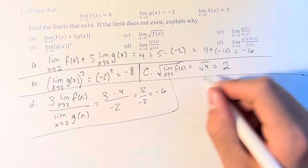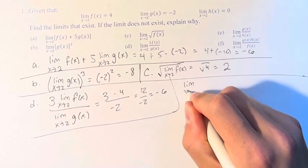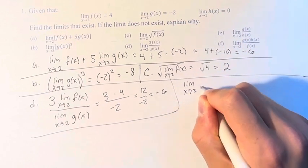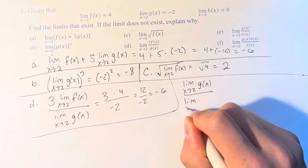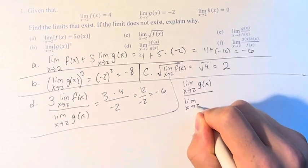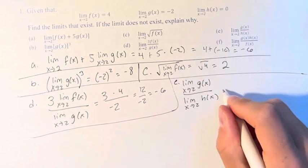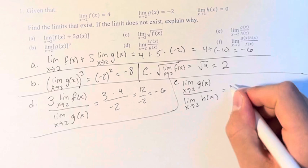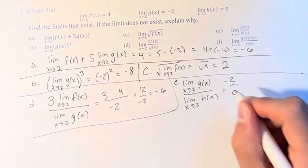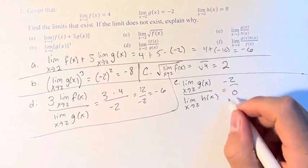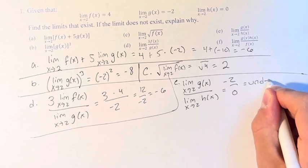The limit as x approaches 2 of g of x over h of x is the limit as x approaches 2 of g of x, over the limit as x approaches 2 of h of x. This is equal to negative 2 over 0. Negative 2 divided by 0 is undefined.